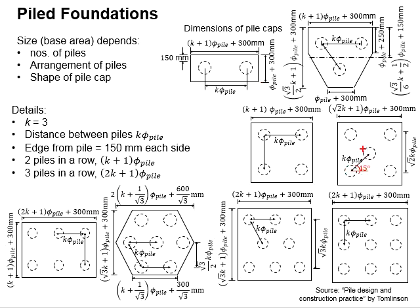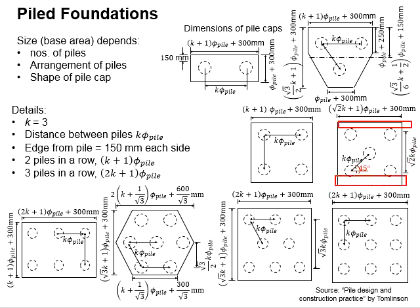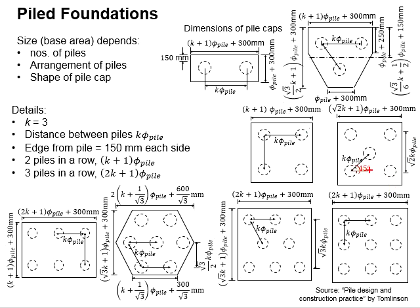This indicates an odd number of piles. While maintaining the constant distance of k times the pile size, through trigonometry you are able to determine this width. That will be 2 times the diagonal component computed from a 45-degree angle, plus half of the pile size on each of three sides, plus 150 mm edge distance on each side. The spacing between two diagonal piles is determined by the square root of 2 times k times the pile size.